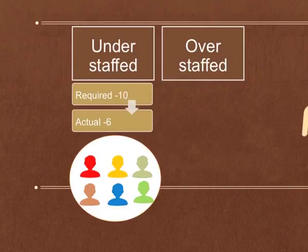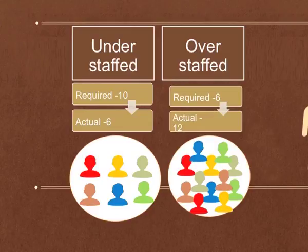Now let us understand what understaffing and overstaffing is. In the first figure, the number of people required in the organization is 10 but the actual number is 6 — this is called understaffing. In the second figure, the number of people required is 6 but the actual number is 12 — this is called overstaffing. Both understaffing and overstaffing are undesirable situations.